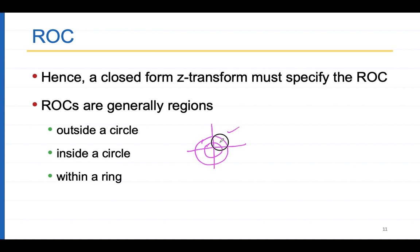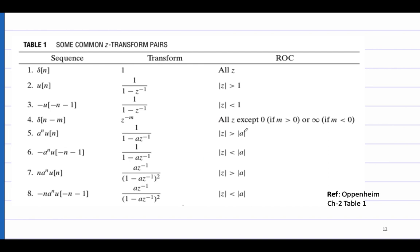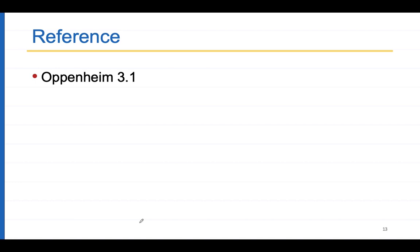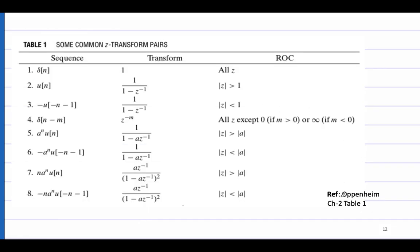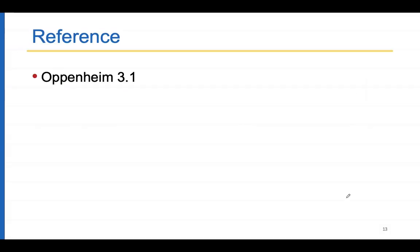There are common Z-transform pairs listed in the textbook by Oppenheim, Chapter 3, Table 1. These pairs can be derived easily, especially if you are familiar with DTFT. The reference for this discussion is Oppenheim Section 3.1. Thank you very much.